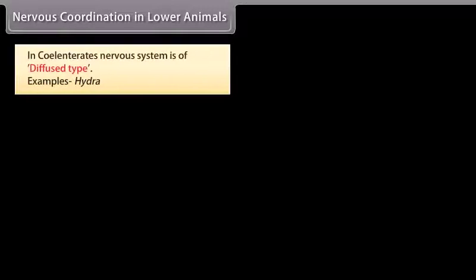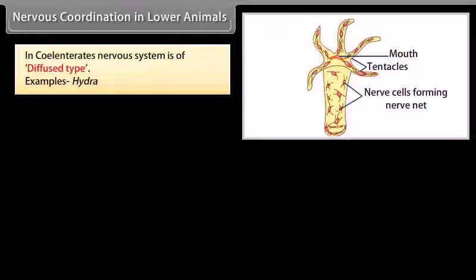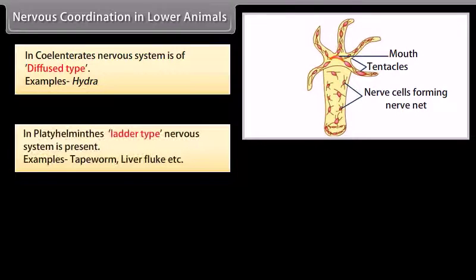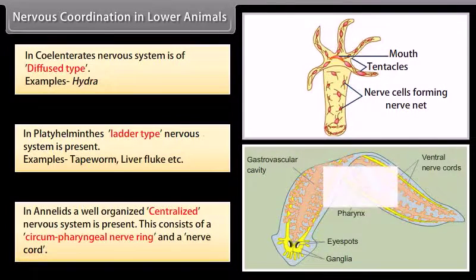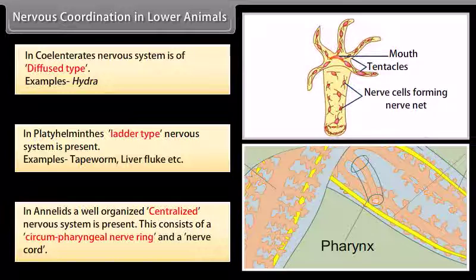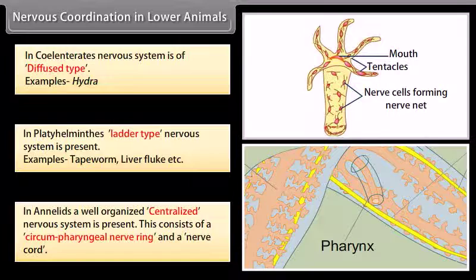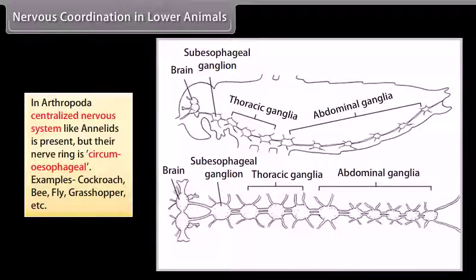In coelenterates, the nervous system is of diffused type; example: hydra. In platyhelminthes, a ladder type nervous system is present; examples: tapeworm, liver fluke, etc. In annelids, a well-organized centralized nervous system is present, consisting of a circumpharyngeal nerve ring and a nerve cord. In arthropoda, a centralized nervous system like annelids is present, but their nerve ring is circumesophageal.